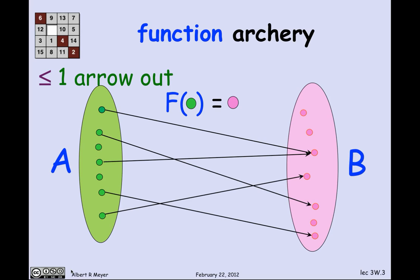Having at most one arrow out implies a unique other end of an arrow out of a domain point, called the value of that point under the relation — which is, in fact, a function f. So f of green equals magenta where there is an arrow out of a green element. But in this picture, not every domain element has an arrow out of it. So this would be an illustration of a partial function, where f of a green element isn't always defined if there's no arrow out.